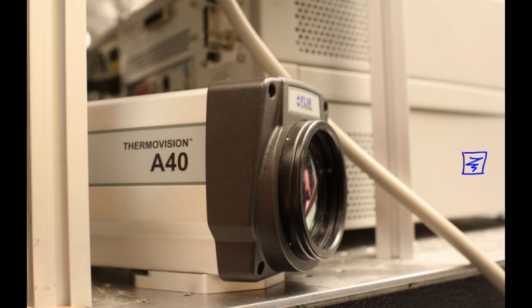A thermal camera can see the radiation given off by all objects and use it to measure their temperatures. For example, cold objects normally give off less radiation than hot objects, which give off more radiation.